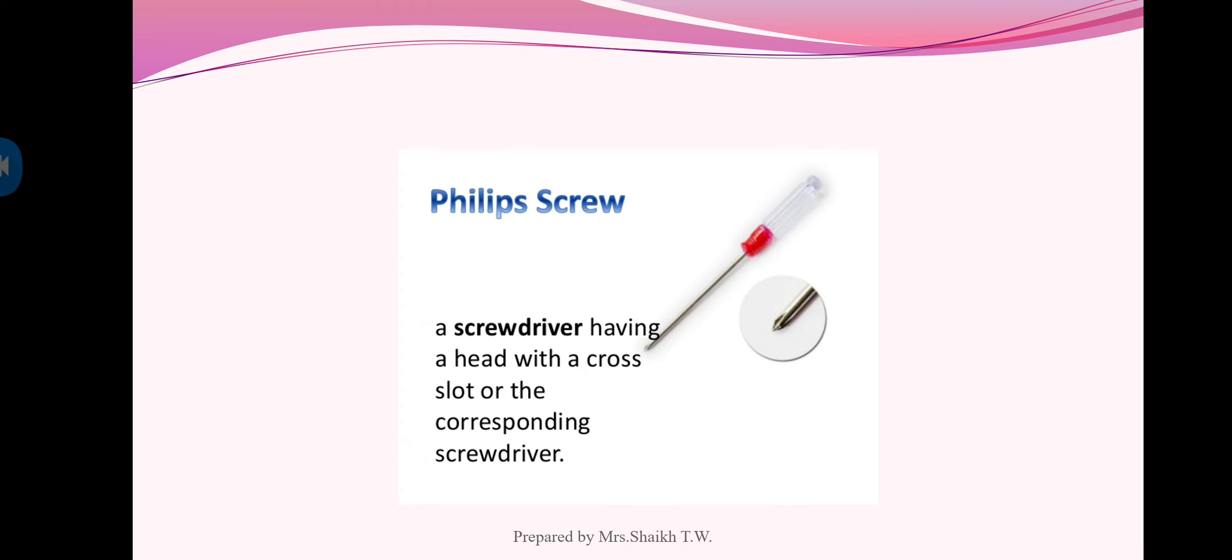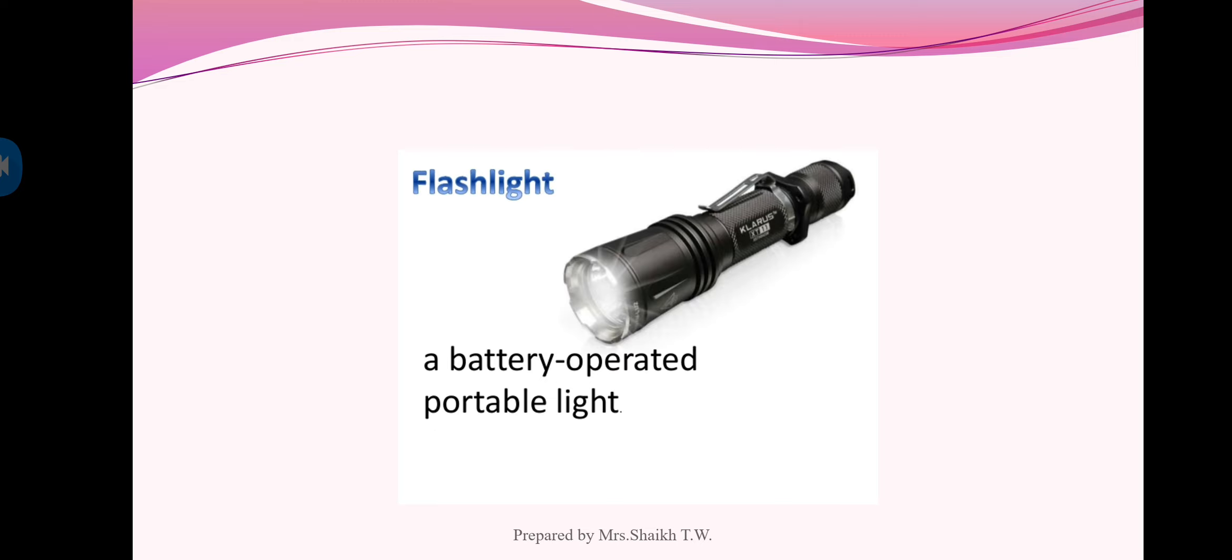Next one is the Philip screw which is just like a screwdriver having a head with a cross slot or the corresponding screwdriver. The figure shows the Philip screw. Next one is the flashlight. Flashlight is used for emergency purpose or battery operated portable light.